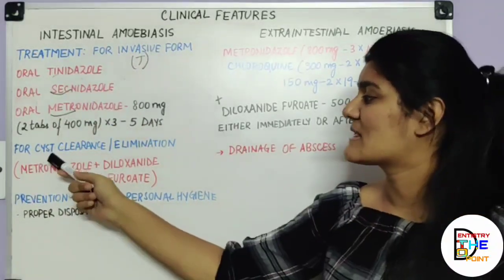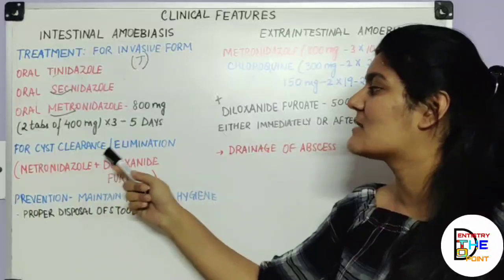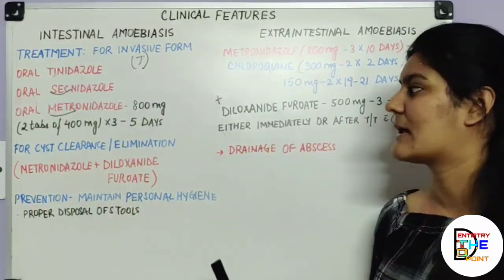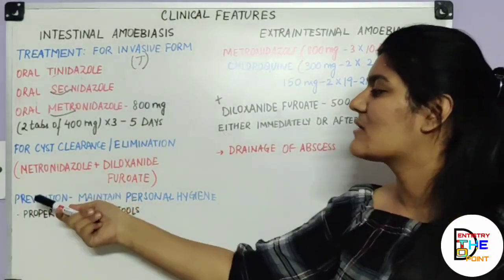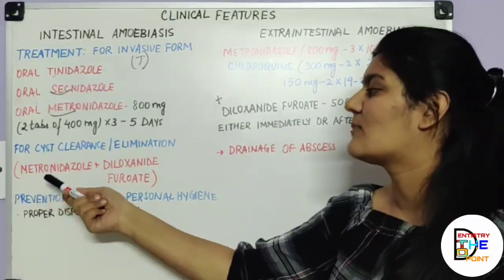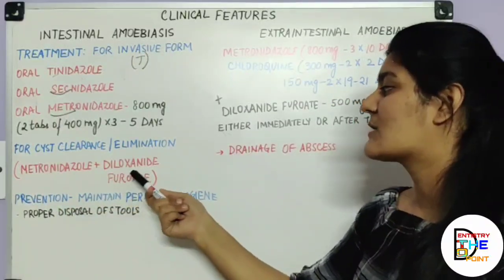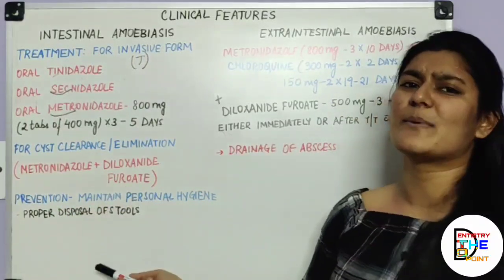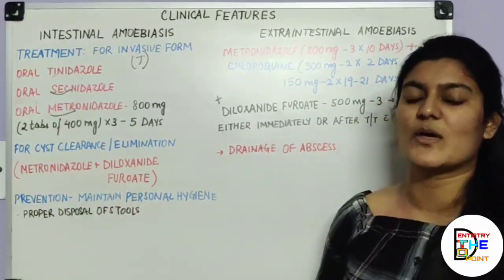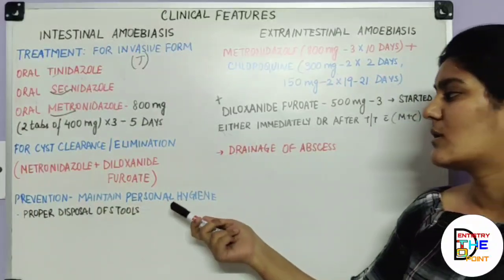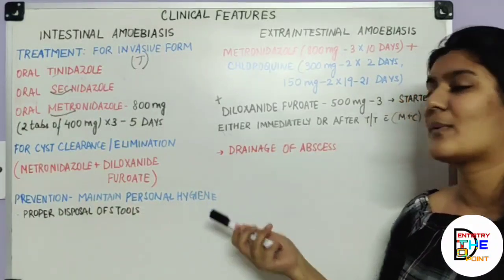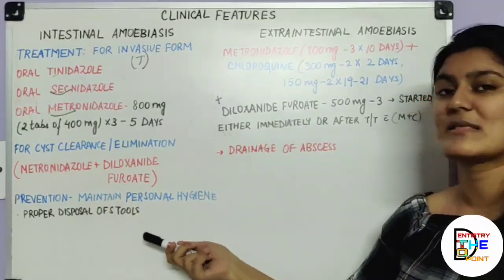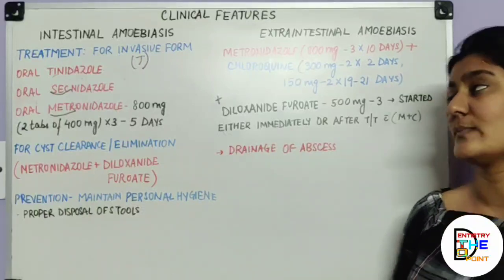For cyst clearance or elimination when cysts are present, the best combination is metronidazole plus diloxanide furoate. Preventive measures include maintaining personal hygiene and carefully disposing of stools to prevent contamination.